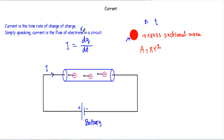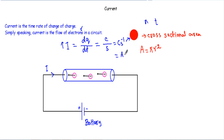The greater the number of electrons moving in the circuit per unit time, the higher the current. Charge has units of Coulombs and time has units of seconds, so Coulombs per second is denoted as ampere — therefore current has units of ampere.